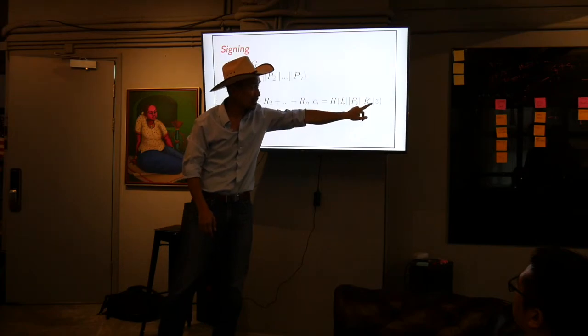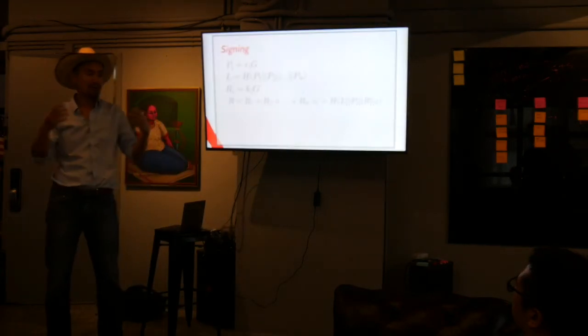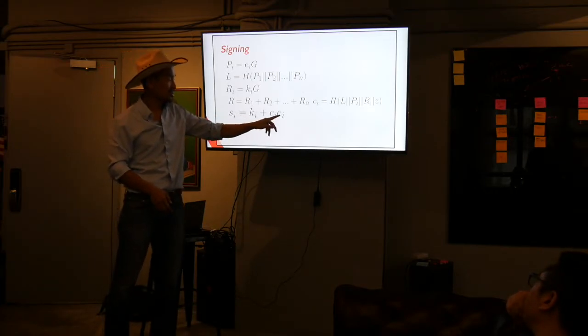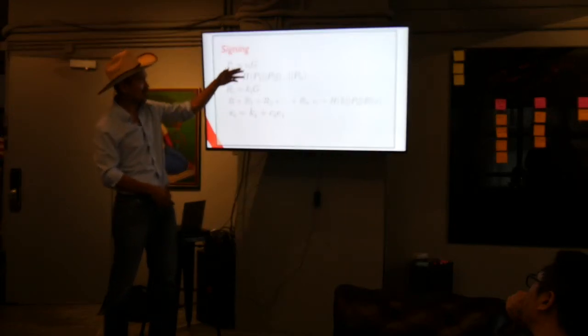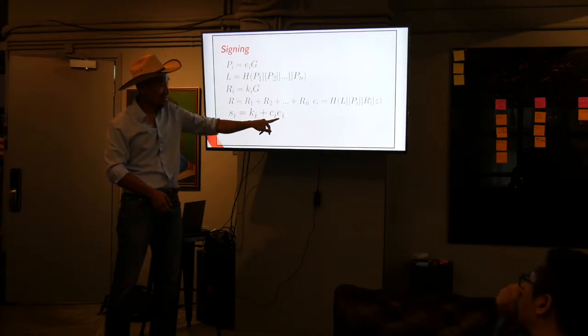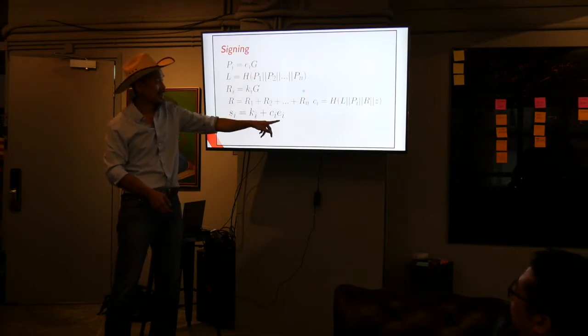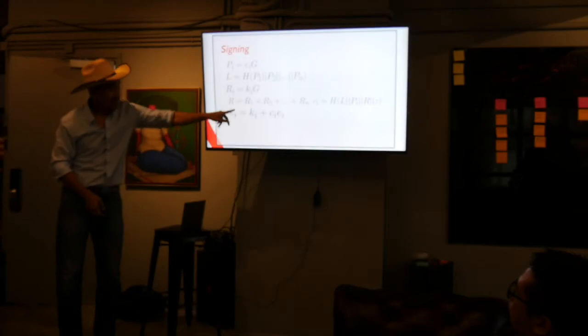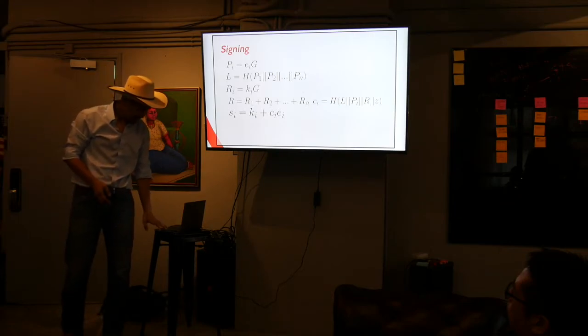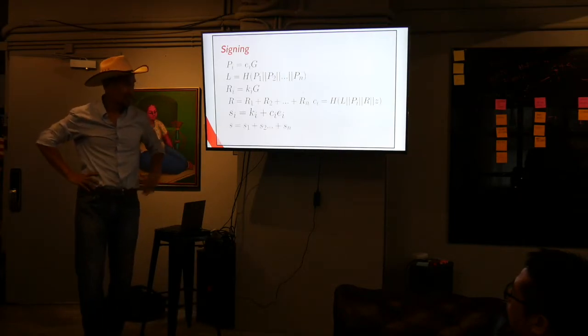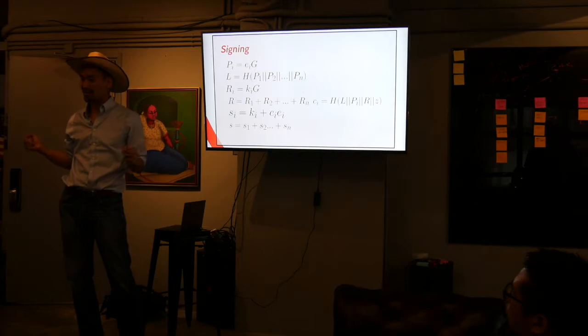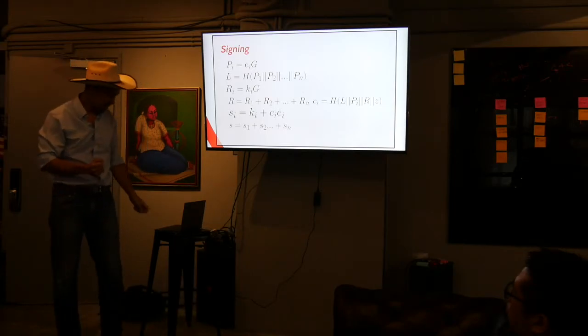And C sub I is going to be the same thing that we figured out from the previous one. Because you know L. You know P sub I. You know R. You know Z. So you can calculate C sub I for yourself and everybody else. And S sub I is going to be K sub I plus C sub I times E sub I. So every person is going to calculate this S sub I based on the K sub I that they chose, C sub I that they can calculate, and E sub I that they know because that's their secret. Okay. So now we have an S sub I. And it's blinded enough that no one can figure it out like reverse engineering. And S is just going to be the sum of all the S sub I's. Right. And that's R and S. That's the aggregated signature.